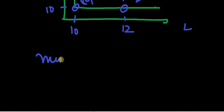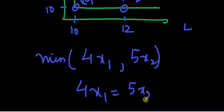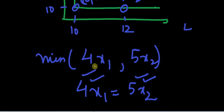Suppose the function is min of 4x1 comma 5x2. I'll say that 4x1 should be equal to 5x2. So x2 multiplied by 5 — that is 5 pairs of x2 — or x1 multiplied by 4 — 4 pairs of x1. Both of them give you the same utility, and that is the kink point.